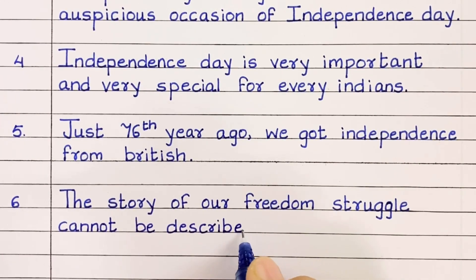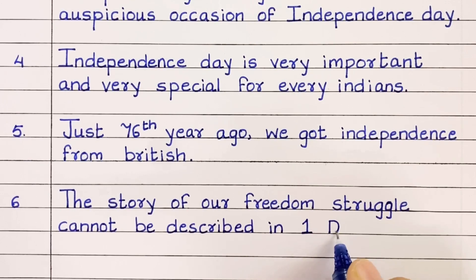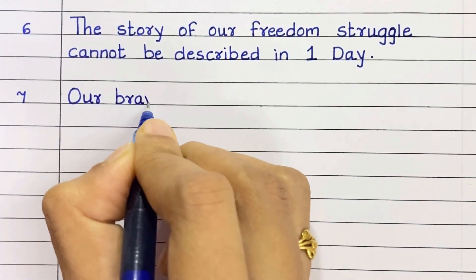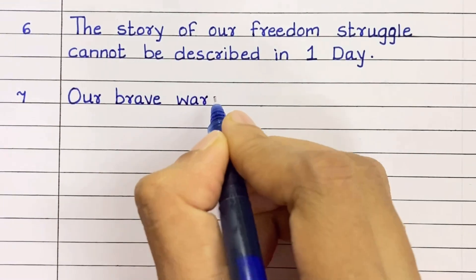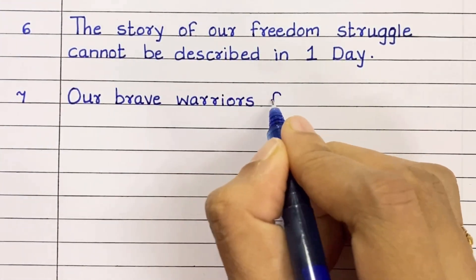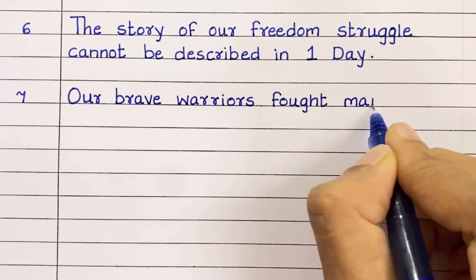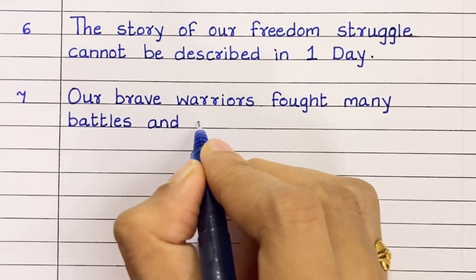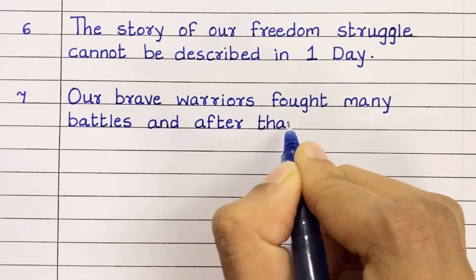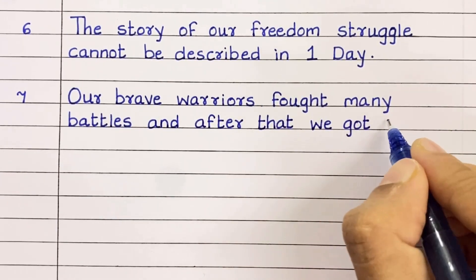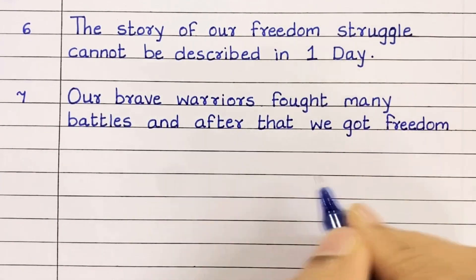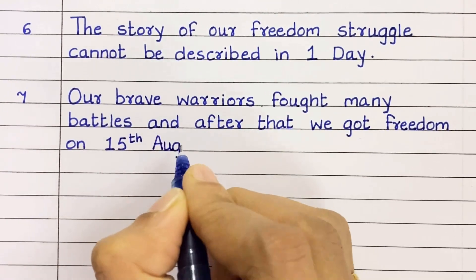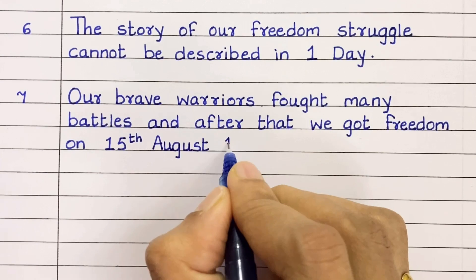Sixth line: The story of our freedom struggle cannot be described in one day. Seventh line: Our brave warriors fought many battles, and after that we got freedom on 15 August 1947.